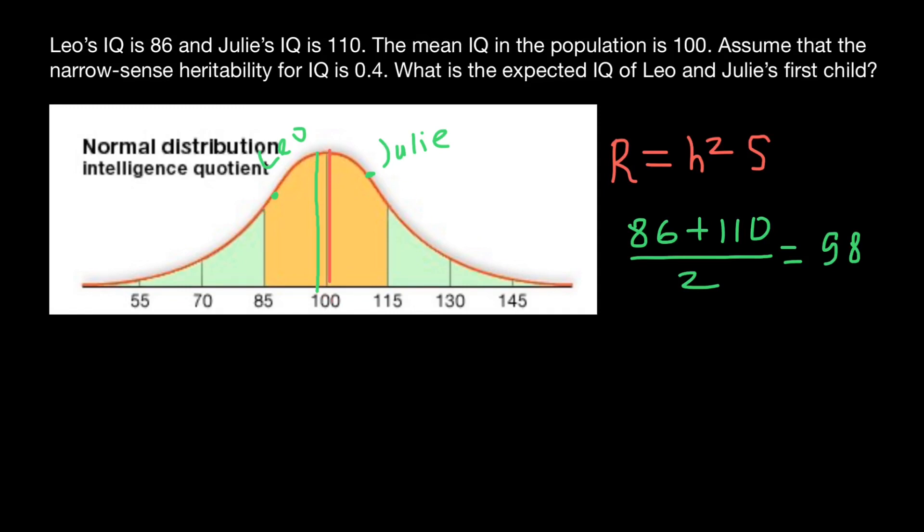Now the final step in our calculation. R, or response to selection, would equal narrow-sense heritability, which is 0.4. This is how a trait can be attributed to genotype or genetics.